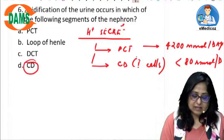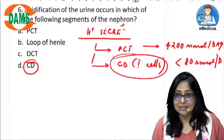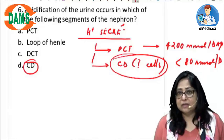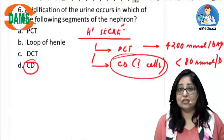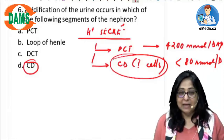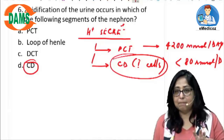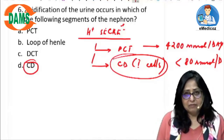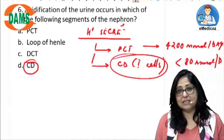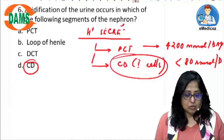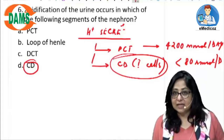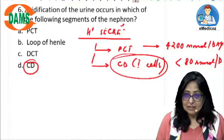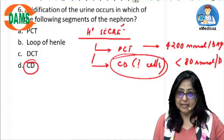Acidification actually occurs in the collecting duct, not in the PCT, in spite of the huge amount of H+ secretion in the PCT. This is mainly because there is an excellent buffer present in the PCT, which is bicarbonate. So even though H+ secretion in the collecting duct is less than 80 millimoles per day, acidification occurs in the collecting duct.